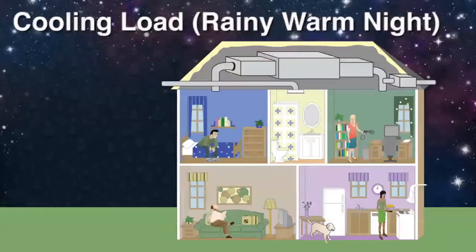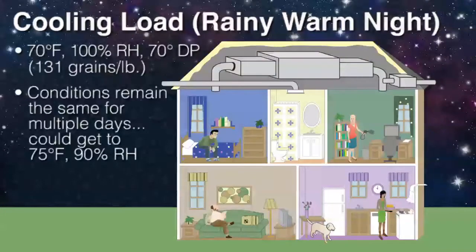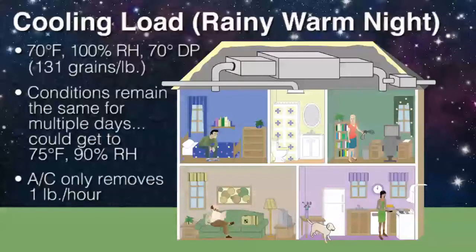Followed by a rainy night — worst case scenario — the moisture levels continue to rise. If this situation continues for several days, which it commonly does, we could easily reach 90% relative humidity in that home and be very uncomfortable. As the AC short cycles in this kind of condition, at best it may remove a pound of water per hour. All of our infiltration and loads here are based on 100 cubic feet of fresh air infiltration plus occupancy of four, which may or may not be the case depending on how the home is utilized.